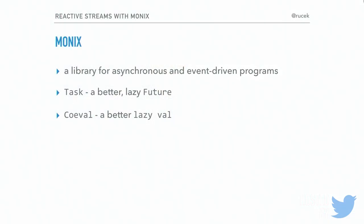In Monix, Task is lazy — you define a description of the computation you want to perform, but it's not executed until you explicitly run the task. Another abstraction is Coeval, which is like a lazy val or by-name parameter in Scala but lifted to a type level, representing an immediate lazy computation. Having it as a type gives you benefits like error handling and pattern matching on the result.